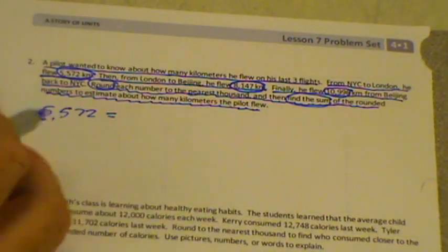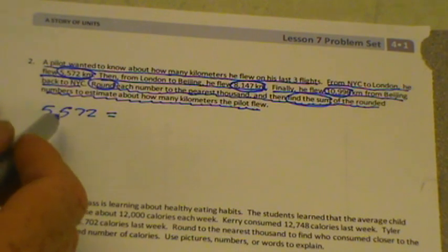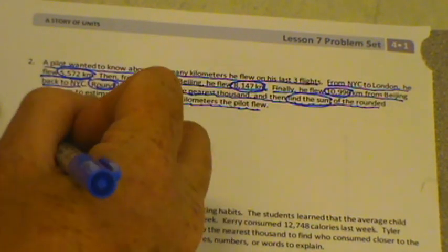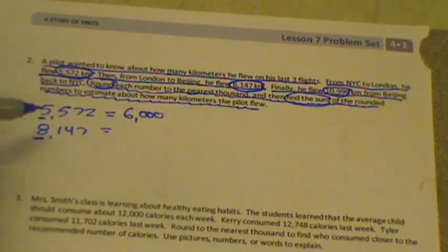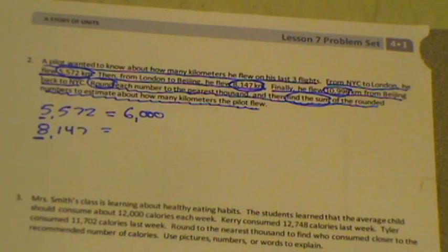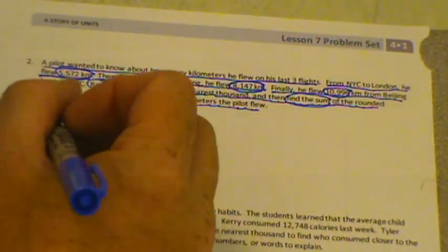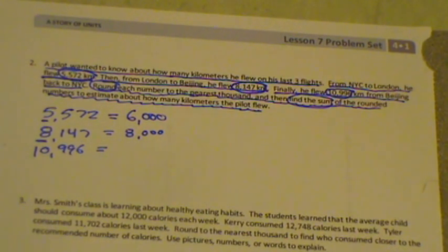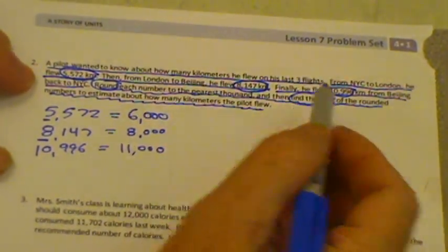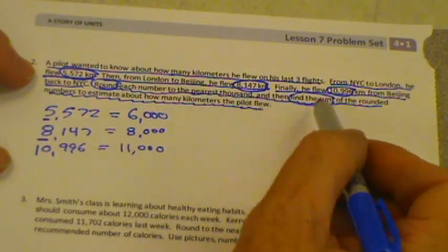So we need to round each number to the nearest thousand and then find the sum of the rounded numbers to estimate about how many kilometers the pilot flew. So we need to round and then we need to find the sum. Remember, sum is the answer to an addition problem. So let's go ahead and round to the nearest thousands. Let's start with the flight from New York City to London. It was 5,572 kilometers. What can we round that to? The nearest thousand, remember? So is this greater than 5,500? Yes. It's closer to 6,000. So we look, is this closer to 8,000 or 9,000? Well, look, there's 100. We'd have to go 900 up to 9,000 and only 147 down to 8,000. So we're going to round down to 8,000. And finally, the last flight is 10,996. So is this closer to 10,000 or 11,000?